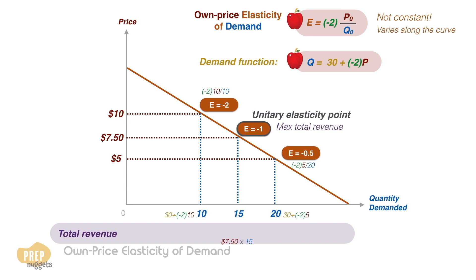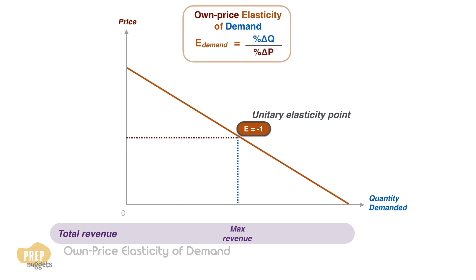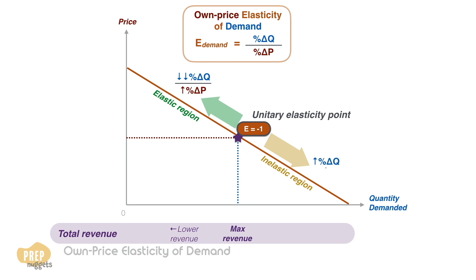An interesting point to note is that total revenue is maximized at the unitary elasticity point. If we multiply the price by the number of units, the total revenue to the sellers is $112.50. At the other two points calculated earlier, the total revenue is lower at $100. This unitary elasticity point is also the dividing point between the elastic and inelastic regions of the demand curve. An increase in price moves us to the elastic region, where the percentage decrease in quantity demanded is greater than the percentage decrease in price, resulting in a decrease in total revenue. A decrease in price moves us into the inelastic region, where the percentage increase in quantity demanded is less than the percentage decrease in price, also resulting in a decrease in total revenue.